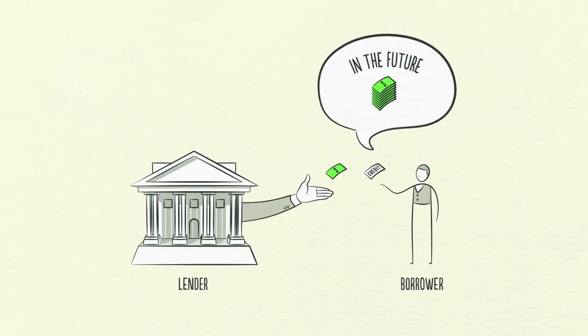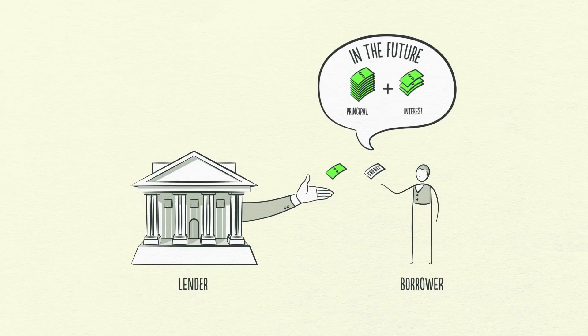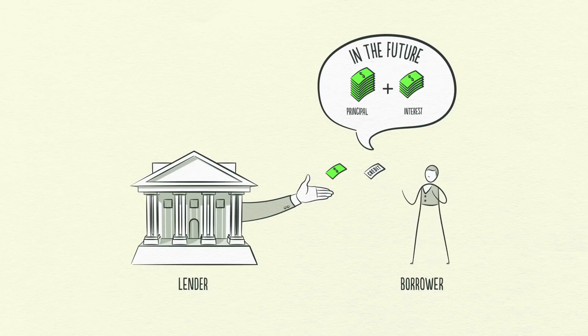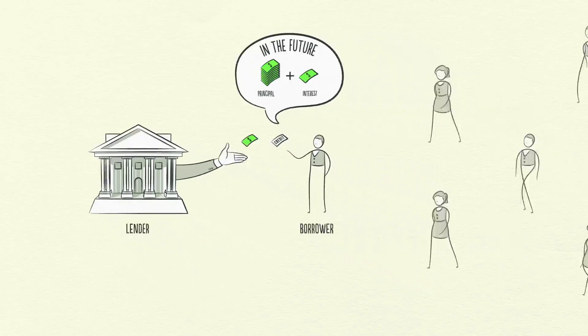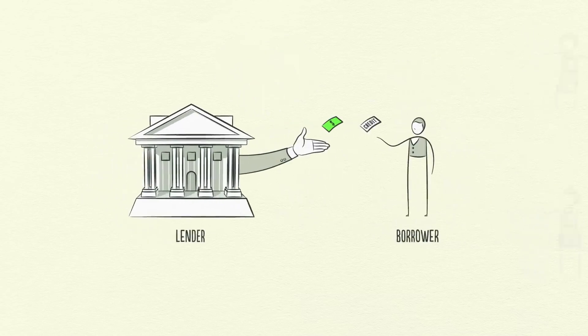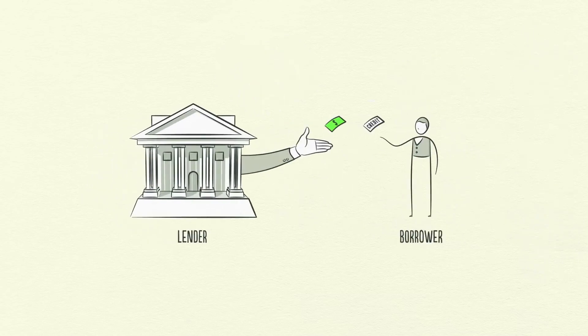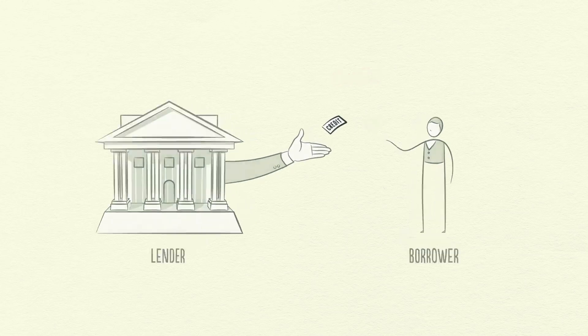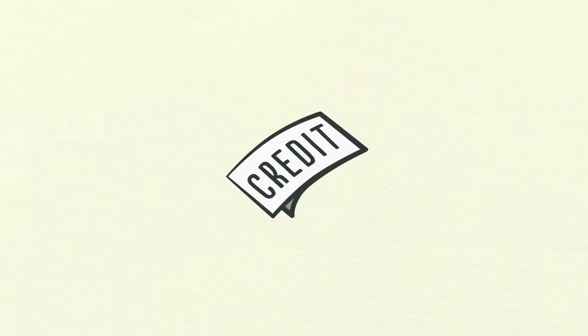Lenders usually want to make their money into more money, and borrowers usually want to buy something they can't afford, like a house or a car, or they want to invest in something like starting a business. Credit can help both lenders and borrowers get what they want. Borrowers promise to repay the amount they borrow, called principal, plus an additional amount, called interest. When interest rates are high, there is less borrowing because it's expensive. When interest rates are low, borrowing increases because it's cheaper.